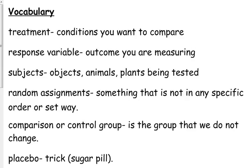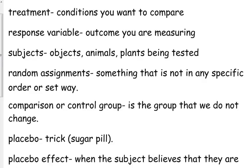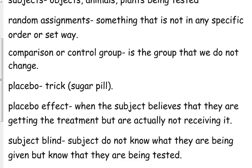You don't want to put things in any specific order or have any influence over how something was assigned. You've got your comparison or control group — depending on the type of experiment, it could be called either one. A placebo is kind of like a trick, or a sugar pill. If you're talking about a study with medicine, they give one group the actual medicine, but they can't give the other group nothing, so they give them a pill that just doesn't have the medicine in it. This is the placebo effect — the person receiving the placebo thinks something is happening just because they're getting a pill, but it's not actually the treatment.